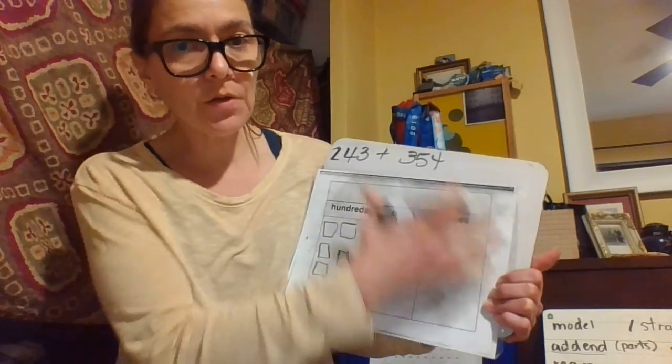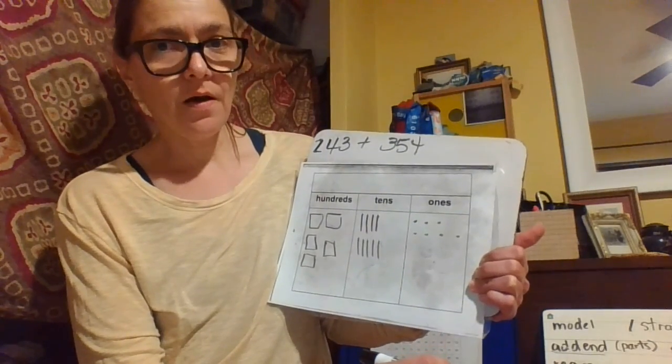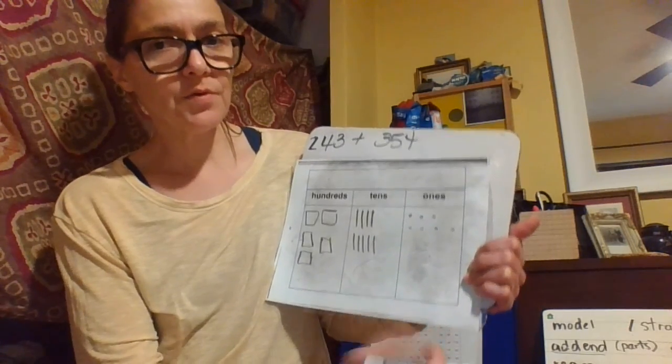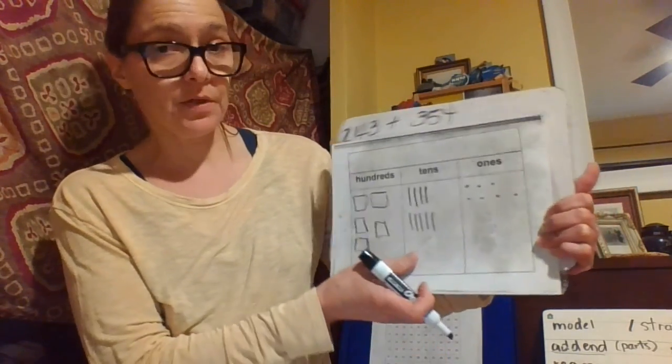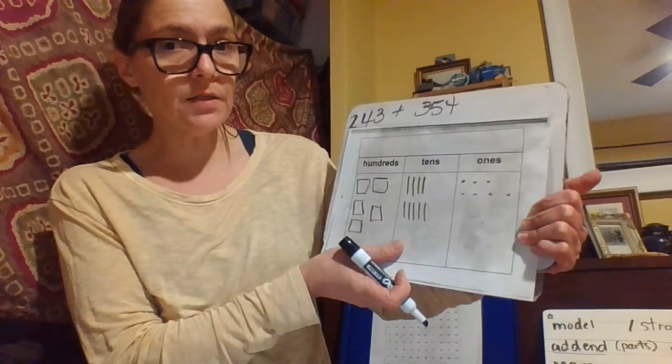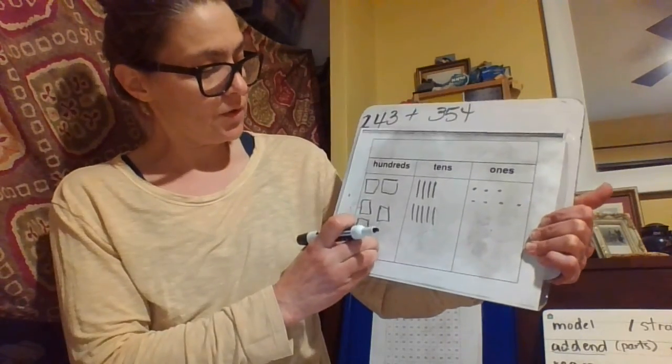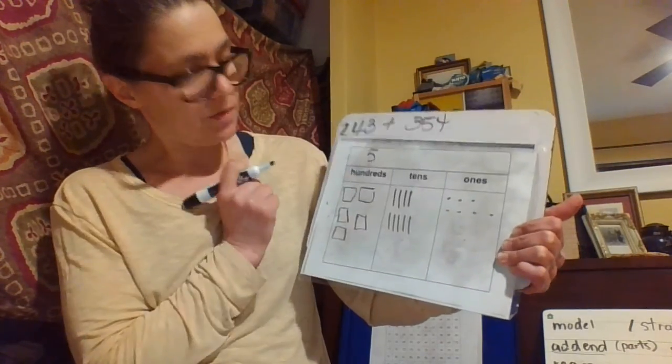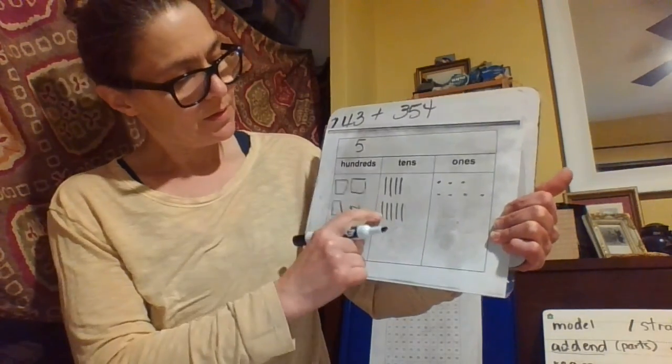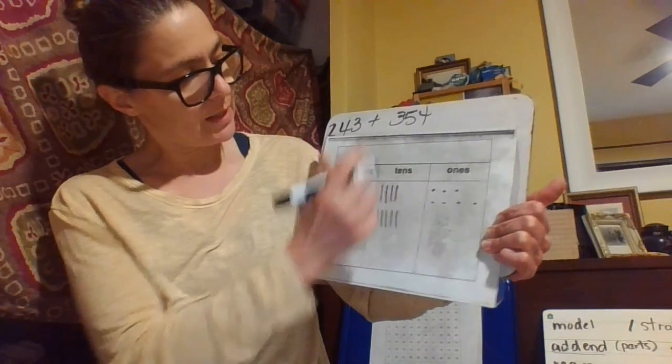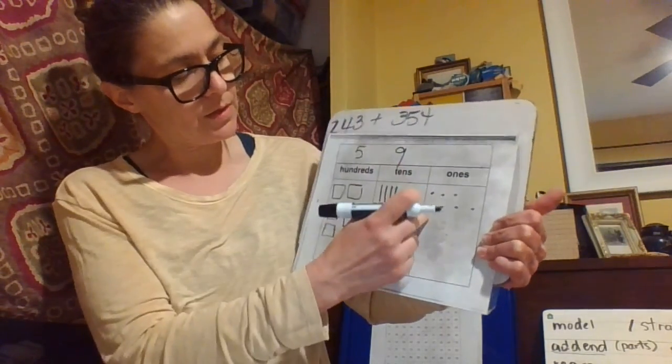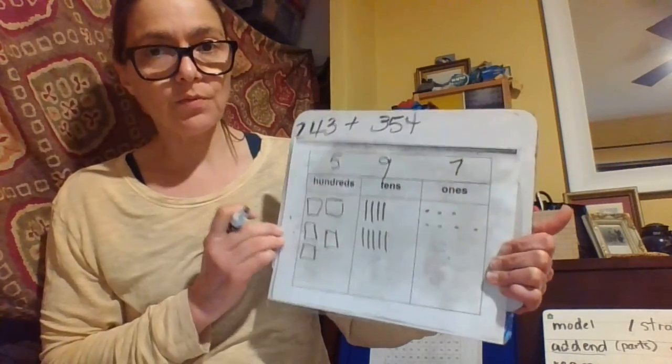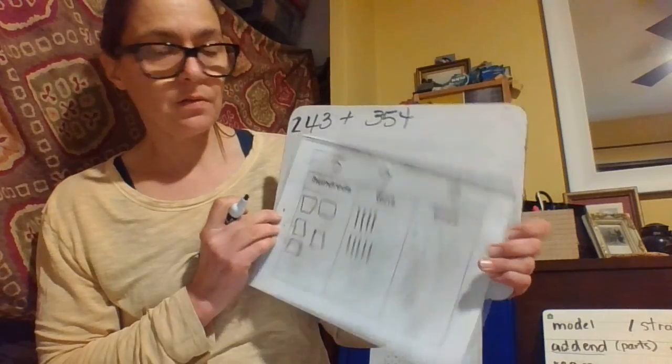The total is the sum of the two addends, the two parts. So how do we do this and let's get ready to explain your work. There's two different ways. You can add the hundreds first. 100, 200, 300, 400, 500. You can add the tens next. 10, 20, 30, 40, 50, 60, 70, 80, 90. And then you can add the ones. 1, 2, 3, 4, 5, 6, 7. And that's one way to do it.